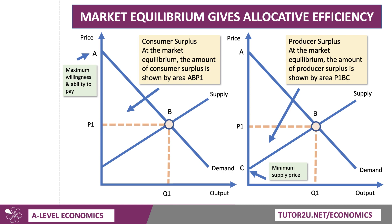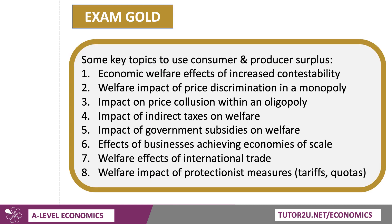So hopefully this is a good quick overview and revision of how to show the areas of consumer and producer surplus. Now, those areas will change if there's a shift in one or both of the demand and the supply curves. So what are some of the key topic areas where you might well bring these concepts in? Welfare economics is a fantastic area to include in your analysis, and the best answers do bring in these key concepts of consumer and producer surplus.